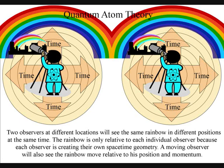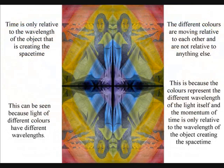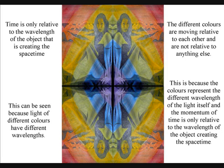You might be thinking that this is just because all the angles are changing, and you will be right. But the important thing is that the different colours are moving relative to each other and are not relative to anything else. This is because the colours represent the different wavelengths of the light itself, and the momentum of time is only relative to the wavelength of the object creating the space-time. Therefore, we see a beauty of a broken symmetry.